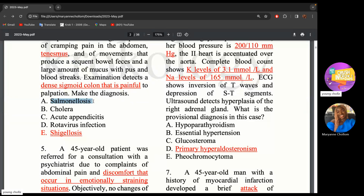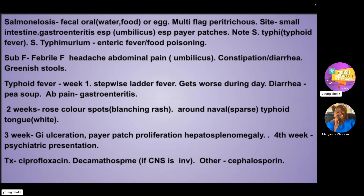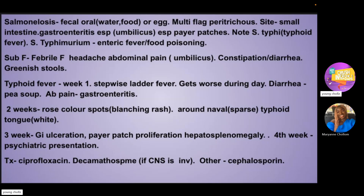Salmonellosis — not typhoid fever, those are two different things — is more of food poisoning via the fecal-oral route. The key clue is exposure to eggs or egg-containing products. It causes gastroenteritis, mostly of the small intestine, so you'll see pain around the umbilicus. Salmonella mostly affects the Peyer's patches because those cells lack basement membranes. Signs include fever, headache, abdominal pain near the umbilicus, constipation or diarrhea, which can have a greenish color.